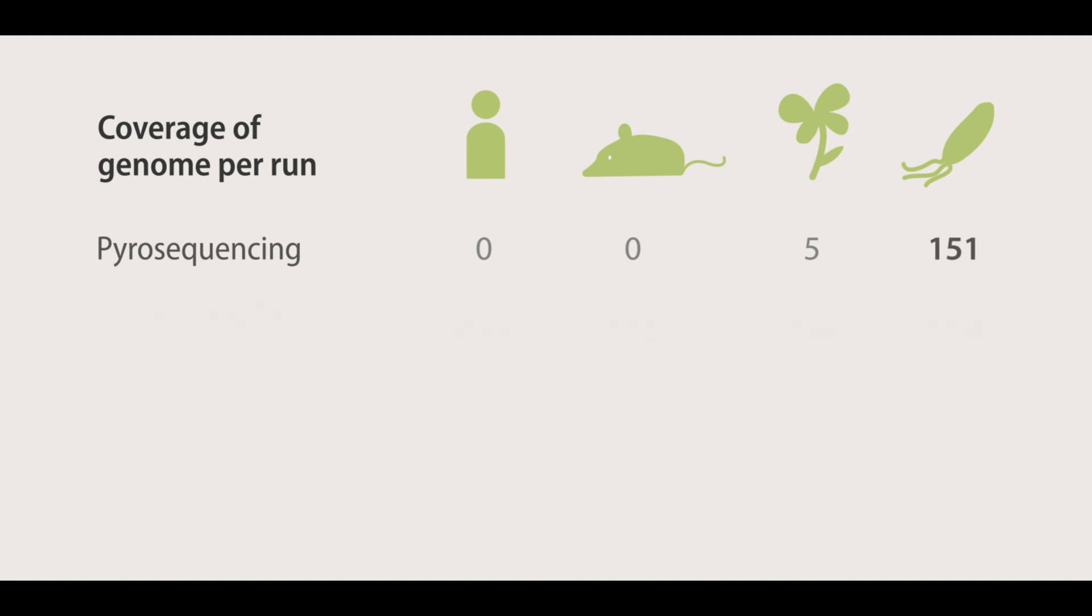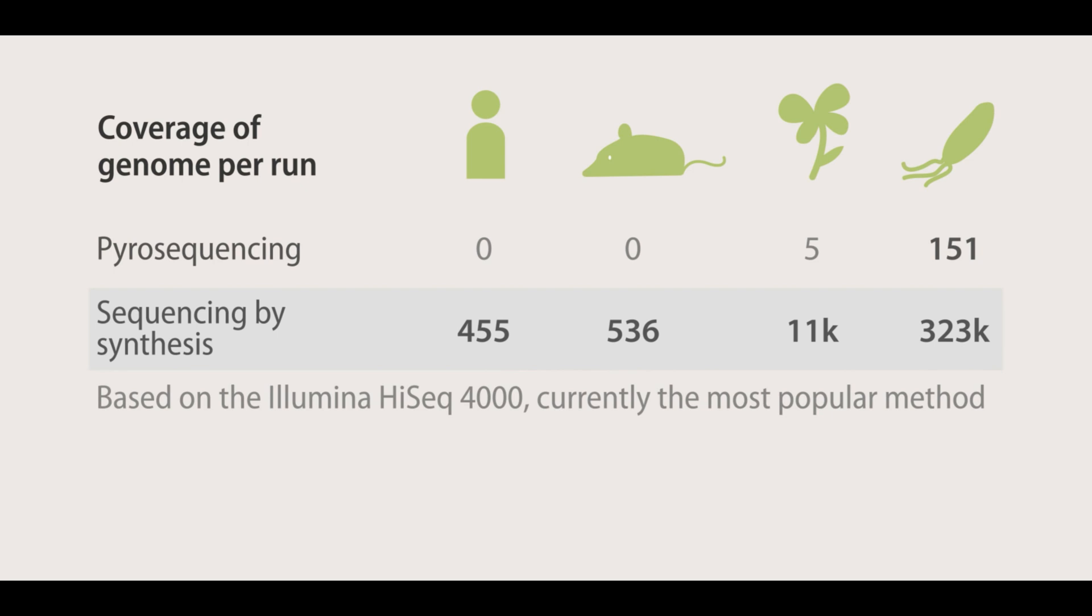The sequencing by synthesis method, which is the most popular method currently on the market, is able to generate hundreds of coverage per run. In fact, with this machine, it is possible to sequence 15 individuals within 3.5 days.